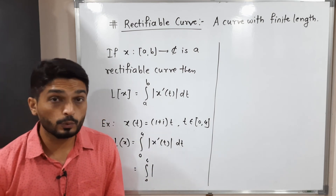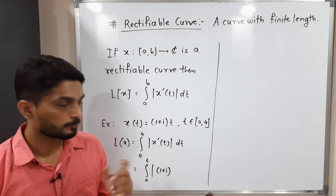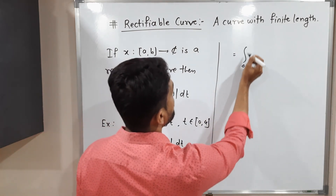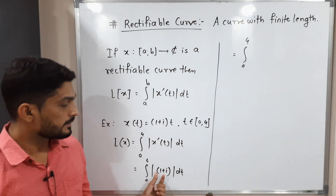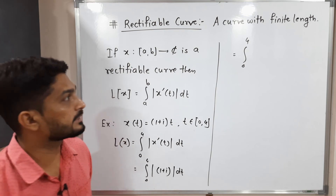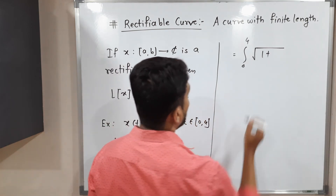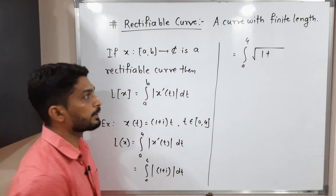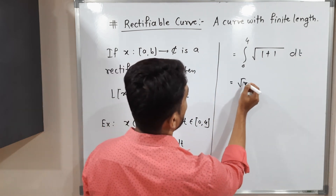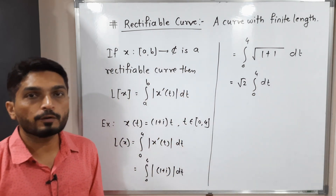This equals ∫ from 0 to 4 of |x'(t)| dt. The derivative: 1 + i is a constant and the derivative of t is 1, so x'(t) = 1 + i. Now |1 + i| = √(1² + 1²) = √2. Since √2 is a constant we take it outside: √2 · ∫ from 0 to 4 dt.